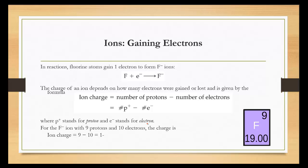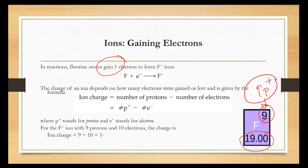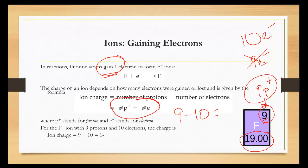Let's look at fluorine — this time it gained an electron. The periodic table gives the atomic mass and the atomic number; atomic number nine means nine protons. In a neutral atom, that means nine electrons, because protons must equal electrons for a charge of zero. But we've gained one electron, so instead of nine electrons we now have ten. Protons nine minus ten gives us a negative one charge — so it would be fluorine with an atomic number of nine and a 1 minus charge. Since no mass number is given, I don't know what isotope it is.